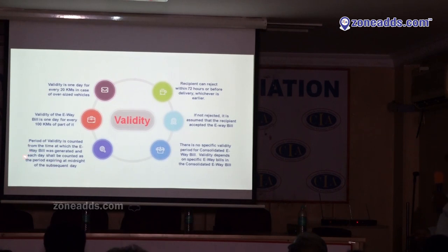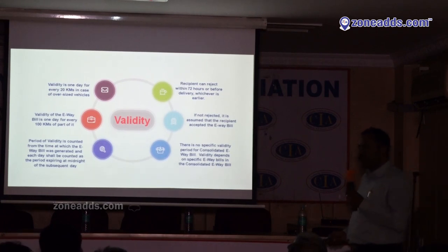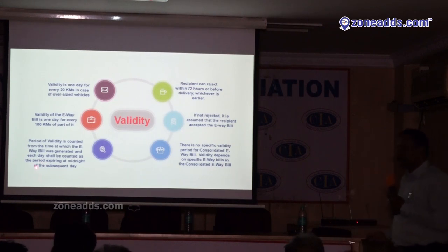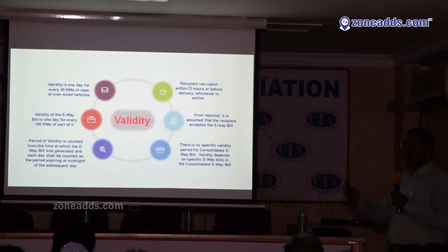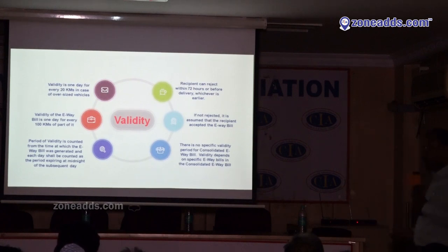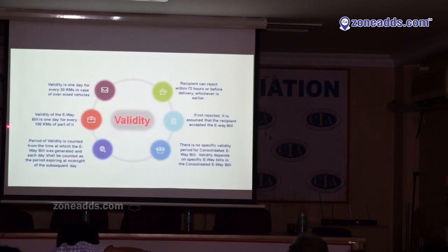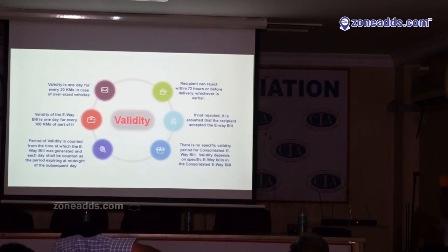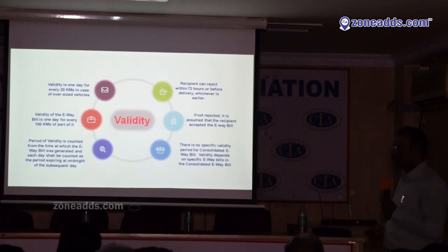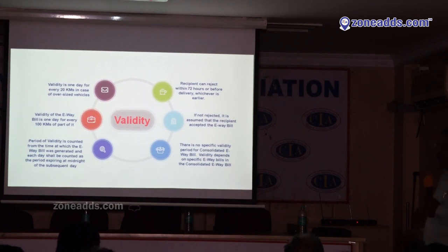Validity: the period of validity is counted from the time the E-way bill is generated — meaning when Part B data is also entered. Validity ends at midnight of the subsequent day. For example, if today at 5 o'clock an E-way bill is generated for a distance of less than 100 kilometers, it is valid till tomorrow's midnight. In normal course, validity is one day for every 100 kilometers. For oversized vehicles (as defined under the Central Motor Vehicles Act), validity is only 20 kilometers per day instead of 100 kilometers.